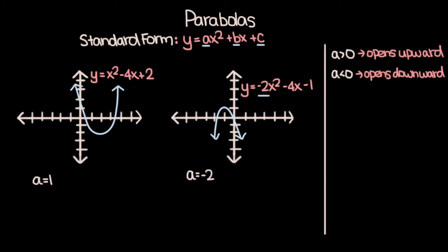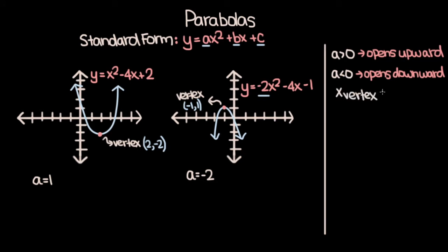The next thing to consider is the vertex of the parabola. For a parabola that opens upward, the vertex is at the minimum point, and for a parabola that opens downward, the vertex is at the maximum point. If we're given the equation of a parabola in standard form, we can find the x-coordinate of the vertex using the formula negative b over 2a, where b and a come from the standard form equation. Once you have the x-coordinate, plug that x-value into the equation to get the corresponding y-value.